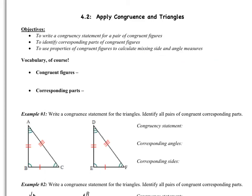Welcome to the second video of chapter 4, which is section 2, Apply Congruence and Triangles. So first we're going to write congruency statements, we're going to identify corresponding parts — those two objectives go together — and then we're going to use properties of congruent figures to calculate missing side and angle measures, so that's going to be adding some algebra back into it. You should be on page 9 in your packet.